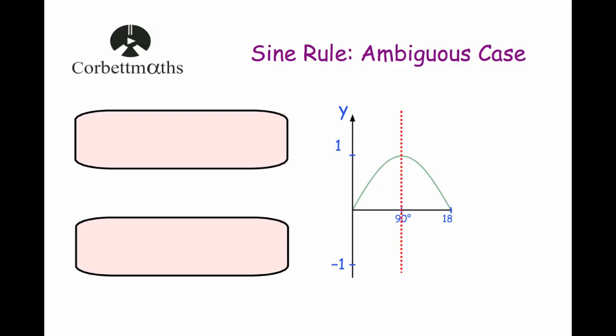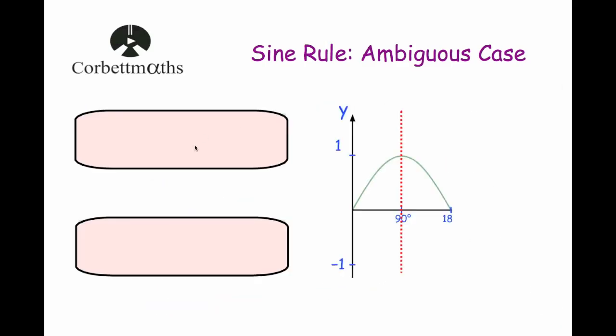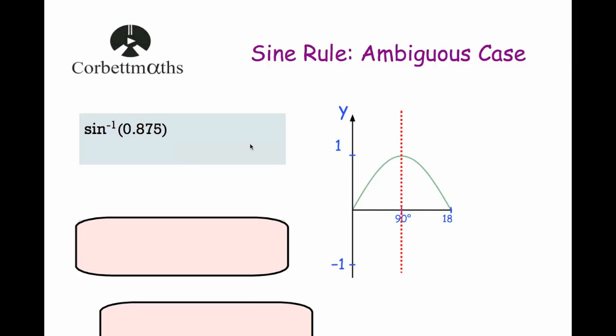So whenever we were doing the question, we got to the point where we had sine theta equals 0.875, and we'd done the inverse sine of 0.875. The calculator came up with an answer of 61.045. When you do the inverse sine of a number between 0 and 1, the calculator will always tell you the acute angle, the angle between 0 and 90 degrees.